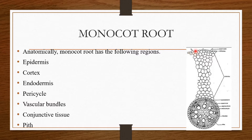This is the epidermal region, and in between the epidermis and endodermis there is the cortical region. This single layer is the endodermis, and within that you can see the pericycle region. This is the vascular tissue, this is the central pith region, and in between xylem and phloem this is the conjunctive tissue.